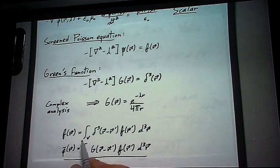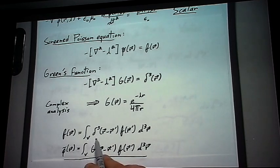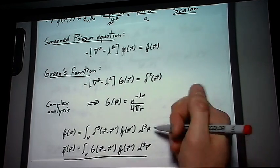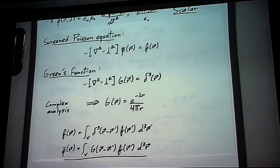And the way we're going to do that is we're going to integrate over a variable r prime. It should be r prime right here. With a weighting function f of r prime.